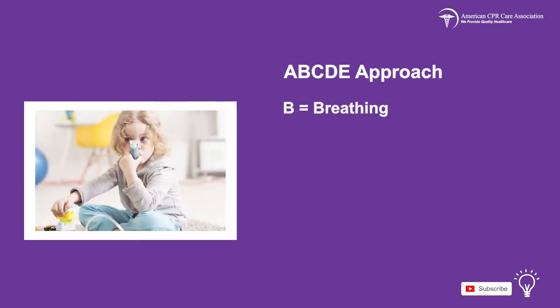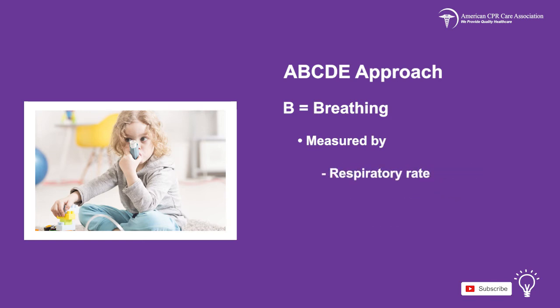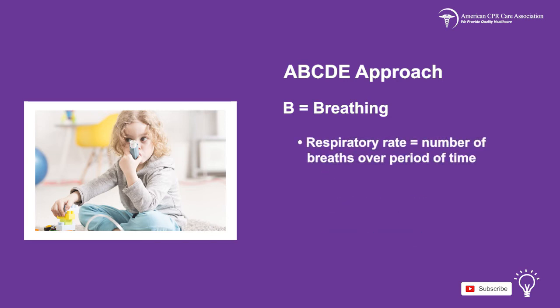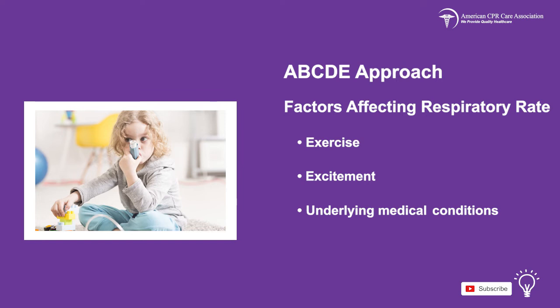B is for breathing and is measured by airway and lung sounds, tidal volume or the amount of air moving in and out of the lungs, respiratory rate, respiratory effort, and pulse oximetry. Respiratory rate is defined as the number of breaths over a period of time, the same for both adults and children. There are different factors that may affect respiratory rate such as fever, anxiety, pain, exercise, excitement, or any underlying medical conditions.